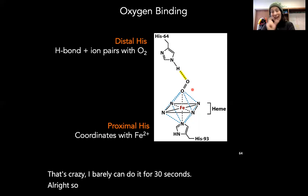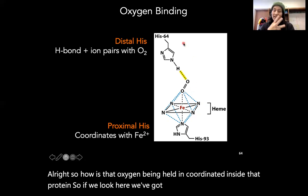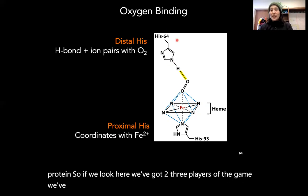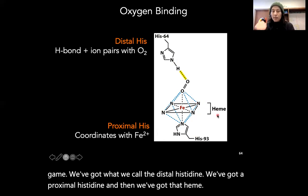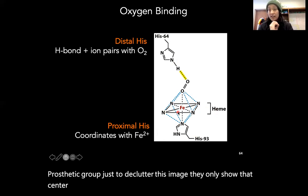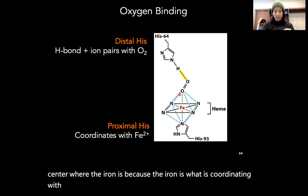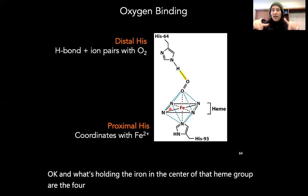So how is that oxygen being held and coordinated inside the protein? There are three key players: the distal histidine, the proximal histidine, and the heme prosthetic group. To declutter, they only show the center where the iron is, because the iron is what coordinates with the oxygen itself. What holds the iron in the center of the heme group are four nitrogens in the rings of the porphyrin ring.